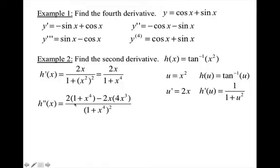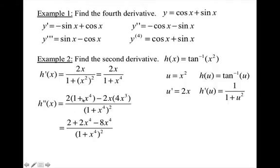So h double prime: derivative of the top — derivative of 2x is 2 — times the bottom, minus the top times the derivative of the bottom, all over the bottom squared. I distribute the 2 through and multiply 2x with 4x cubed, then combine like terms. I could factor out a 2 on top, but it's not necessary, so I'm going to consider this done.